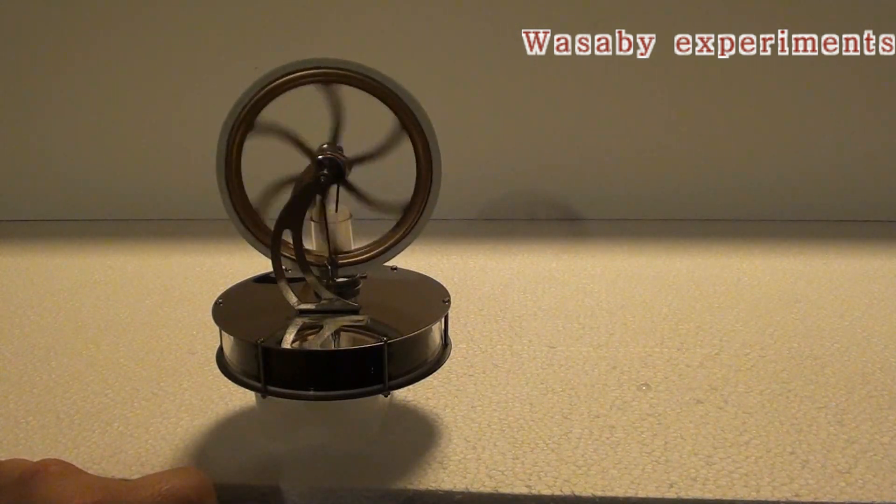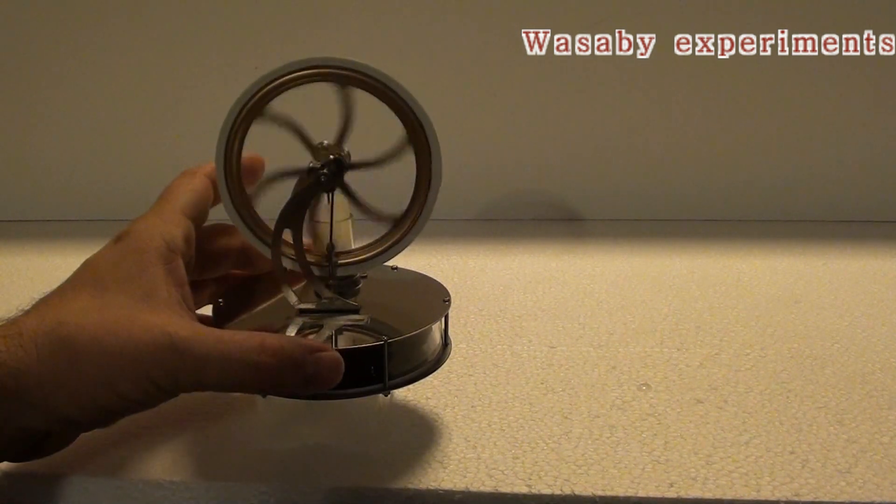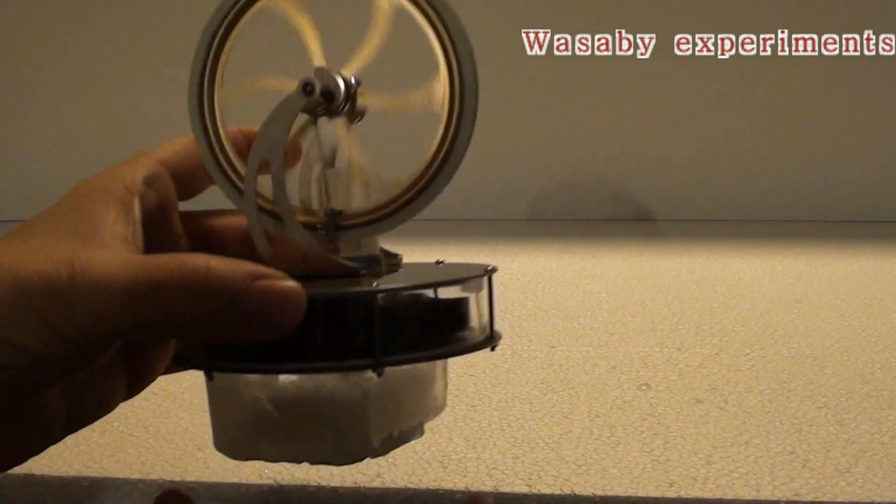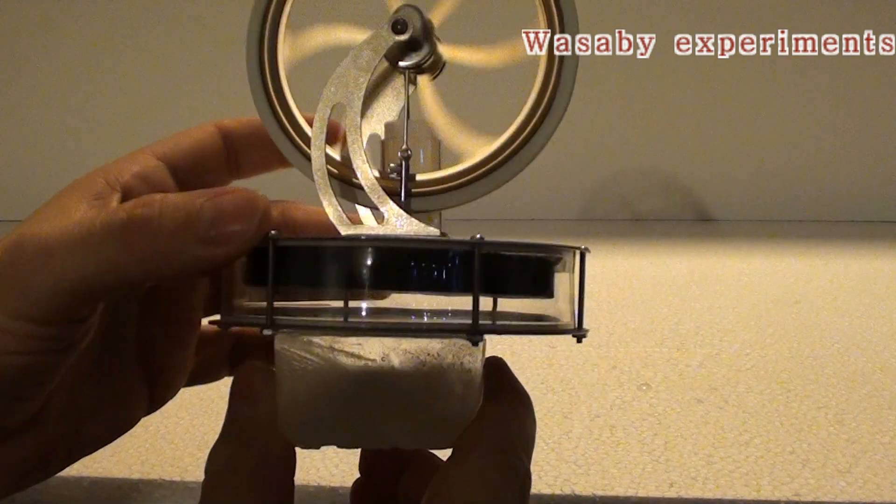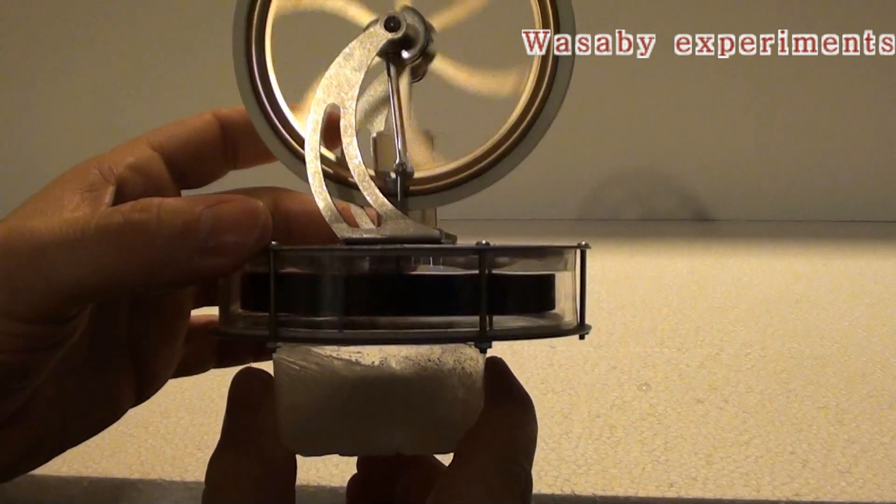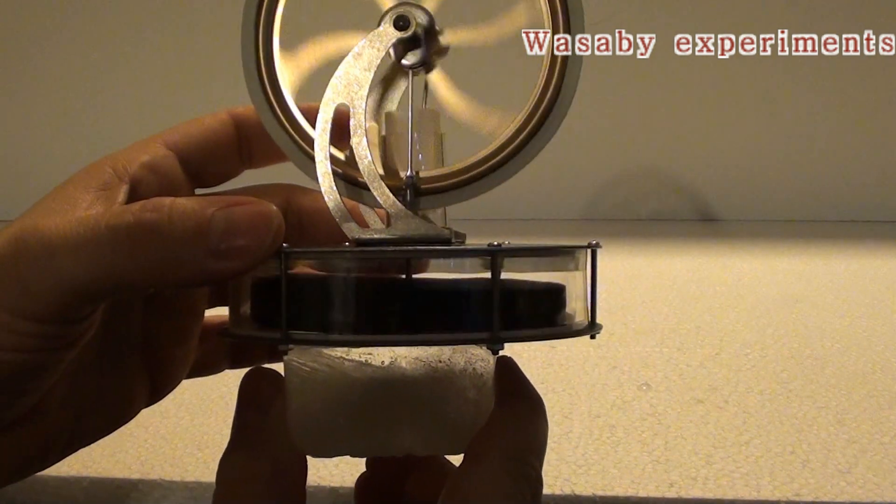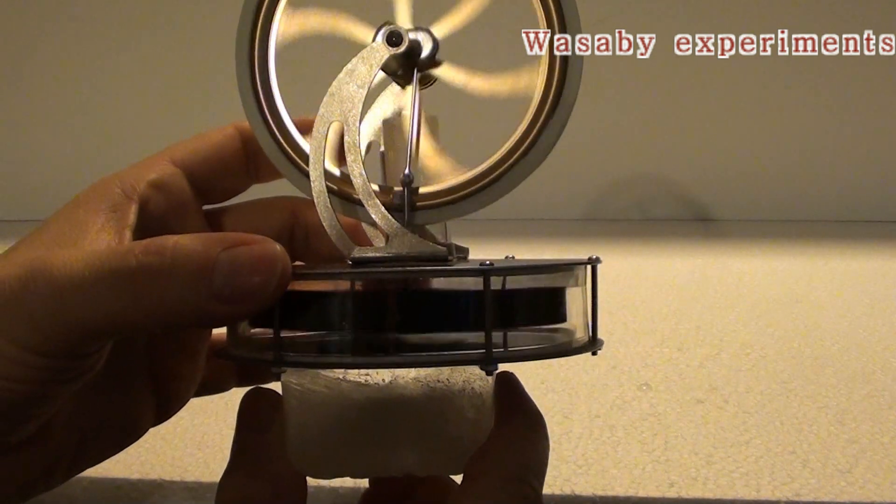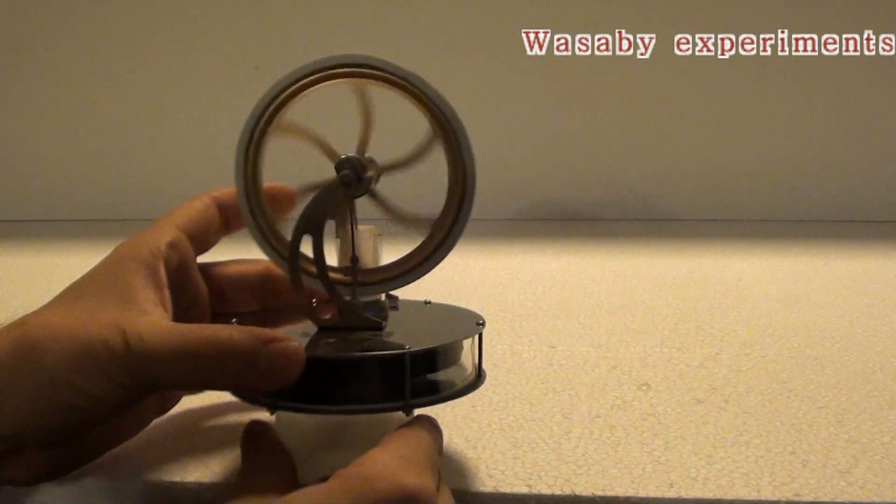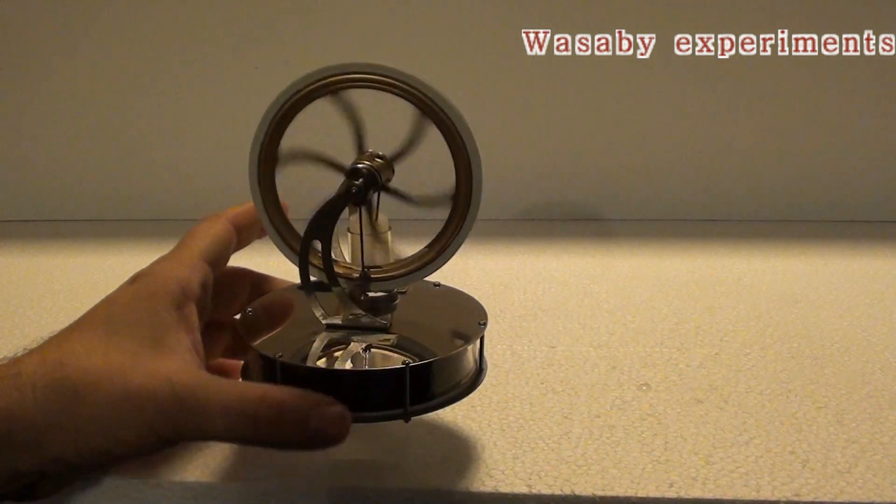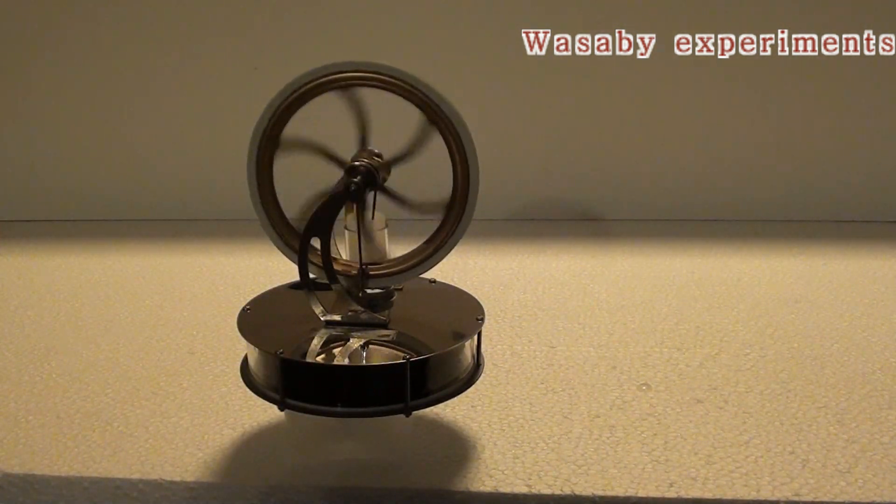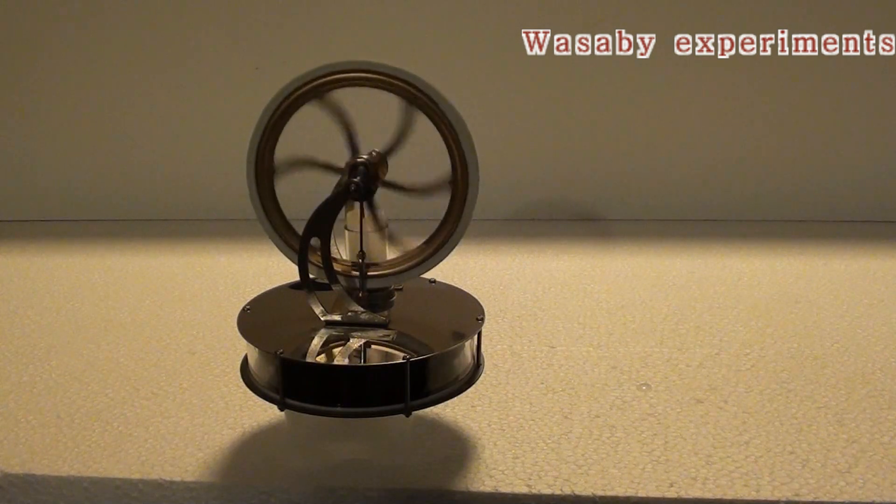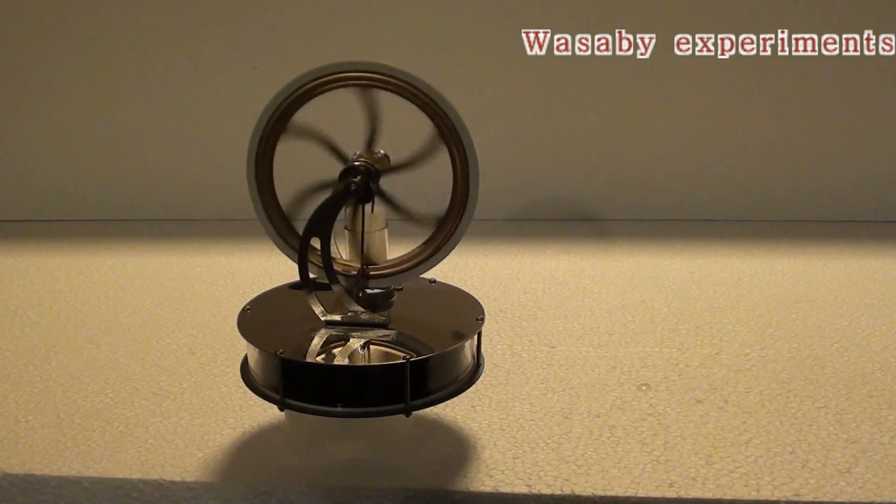So this engine is really interesting, the operation is quite interesting, you can see how it works. This is a simple presentation of how to use ice as free energy for this Stirling engine. You can get ice everywhere outside when it's cold, so it's quite free. This is all for today.